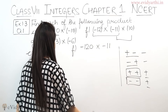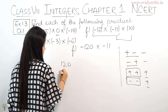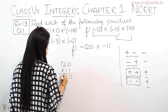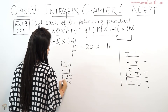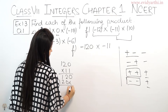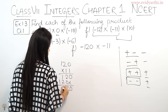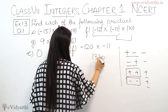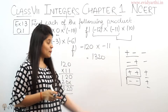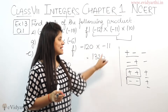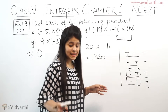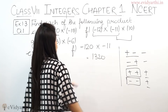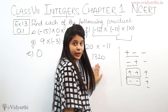Now multiply 120 by 11. The result is 1320. The sign: minus 120 × minus 11 — minus × minus = plus. So Part F answer is positive 1320.